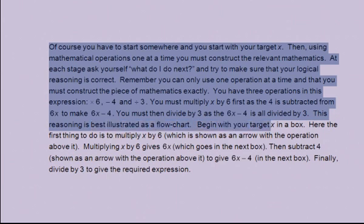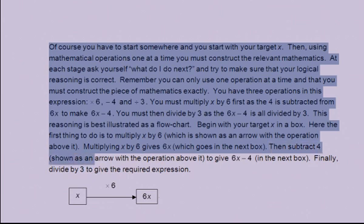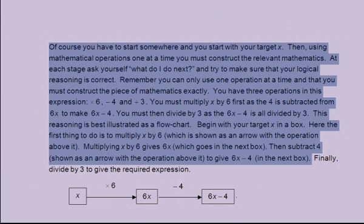Begin with your target x in a box. Here, first thing to do is to multiply x by 6, which is shown as an arrow with the operation above it. Multiplying x by 6 gives 6x, which goes in the next box. Then subtract 4, shown as an arrow with the operation above it, to give 6x minus 4 in the next box. Finally, divide by 3, to give the required expression.